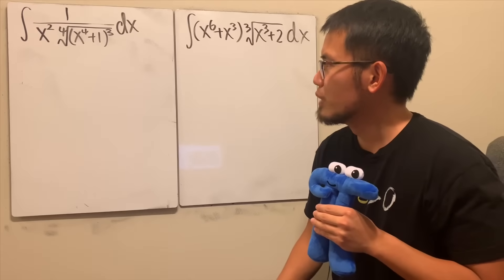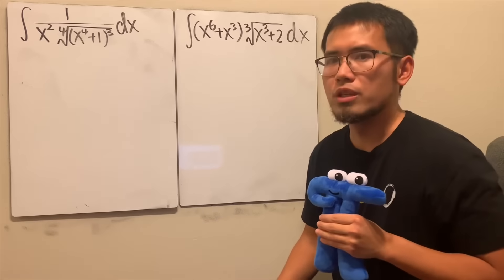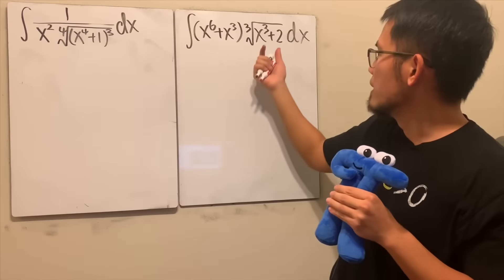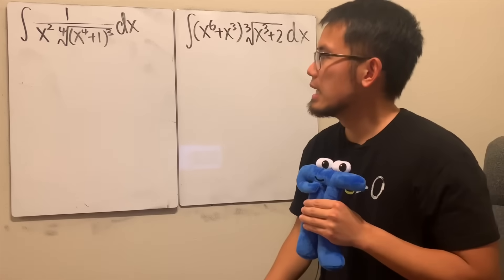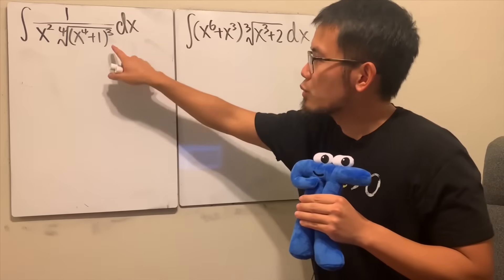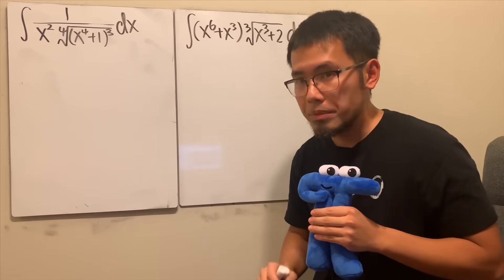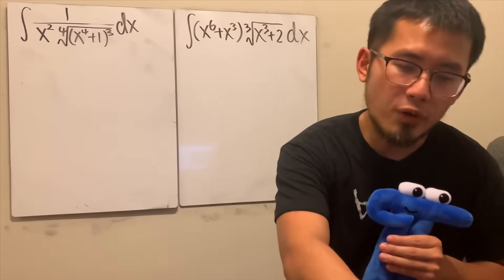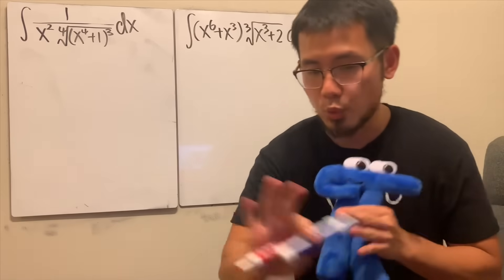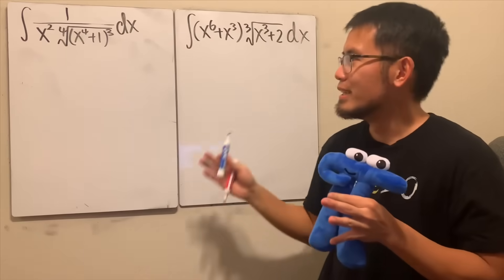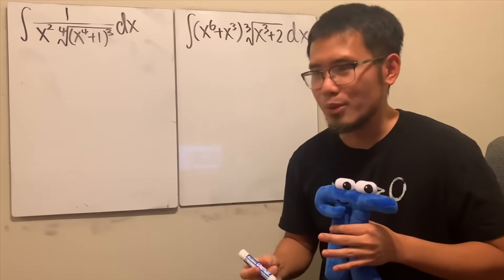It doesn't seem like we can just do an easy substitution — if I let u equal to the inside, it's a no. But first I'd like to tell you this question is from the MIT Integration Bee, and also from the book called 'Putnam and Beyond.' Both are great, but you have to think about all the possibilities in order to solve these kinds of questions.